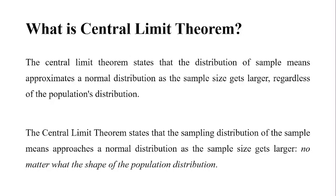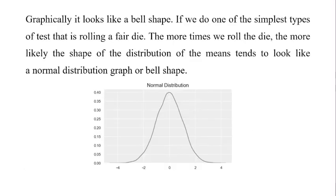No matter what the population distribution shape is, graphically it looks like a bell shape. If we do one of the simplest types of tests — that is rolling a fair die — the more times we roll the die, the more likely the shape of the distribution of the mean tends to look like a normal distribution graph, or bell shape.